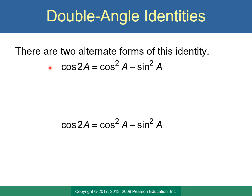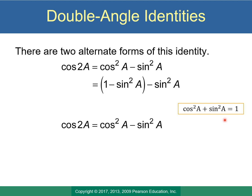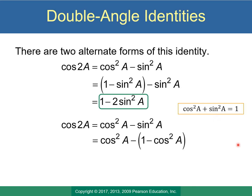There happen to be two alternate forms for cosine of 2a — this is the only identity with three forms. A quick reminder of our Pythagorean identity: cos²a + sin²a = 1. For the first alternate form, solve for cos²a and replace it with 1 − sin²a, then simplify to get 1 − 2sin²a. For the second alternate form, solve for sin²a, replace with 1 − cos²a, and simplify to get the third version of cosine 2a.